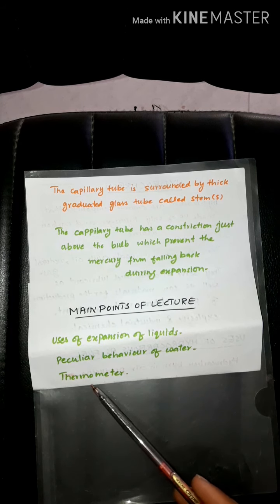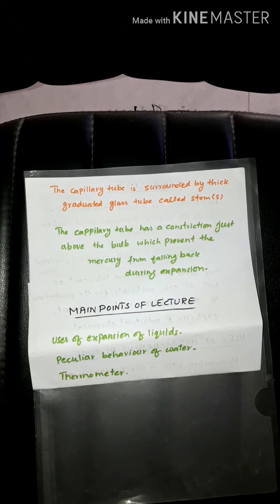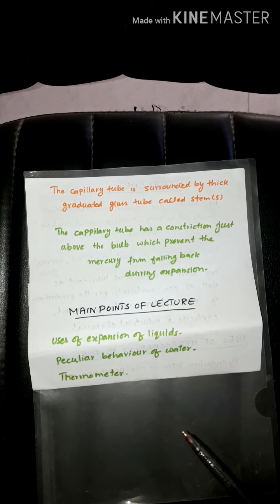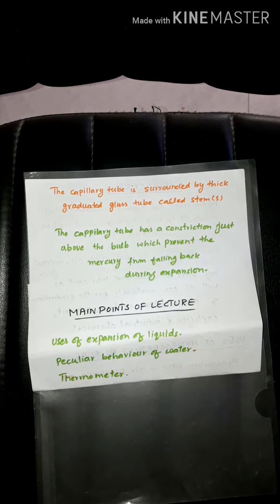This increase in volume of water is called the peculiar or anomalous behavior of water. We also discussed thermometers — an instrument used for measuring temperature. The common thermometer consists of a glass bulb connected to a thin glass tube called a capillary tube. The bulb is filled with mercury, surrounded by a thick graduated glass tube called the stem, and the capillary tube has a constriction just above the bulb which prevents mercury from falling back.